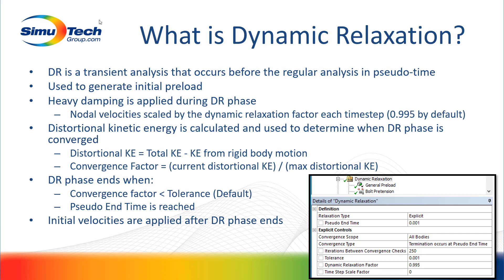Dynamic relaxation is essentially a transient analysis that happens before your regular analysis in what's called pseudotime. So before time zero, you have pseudotime that goes for a little while, and then when the dynamic relaxation phase is done, you start at time zero in the actual analysis. Dynamic relaxation is used to generate initial preload, and it uses heavy damping to damp out vibrations caused from the loading that happens during dynamic relaxation.